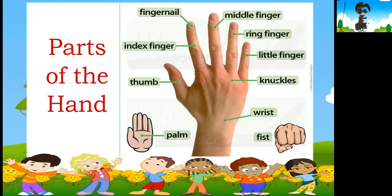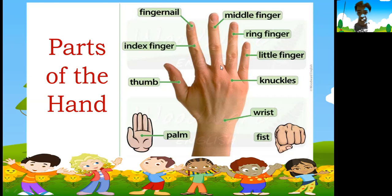Let us move to the parts of the hand. We start with the palm — the space that holds something. If you close your hand, you call this a fist. This is our thumb. Index finger. This is our fingernail — each finger has a fingernail. Middle finger. Ring finger. And little finger. Knuckles. Then this part here is our wrist. Those are the parts of our hand.